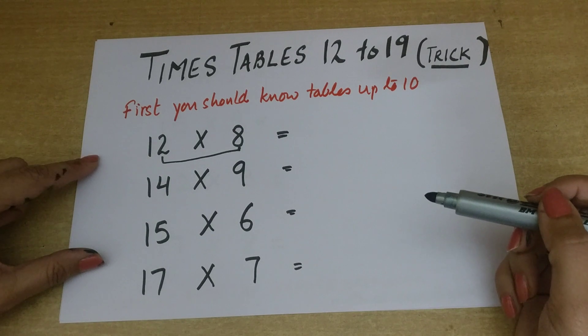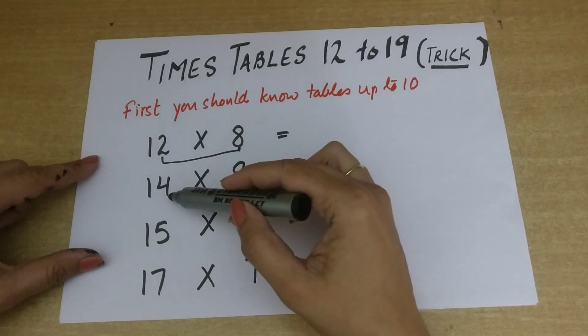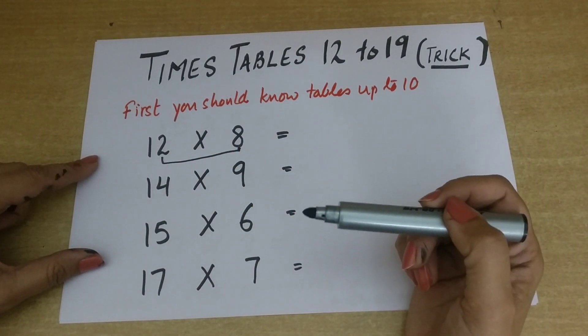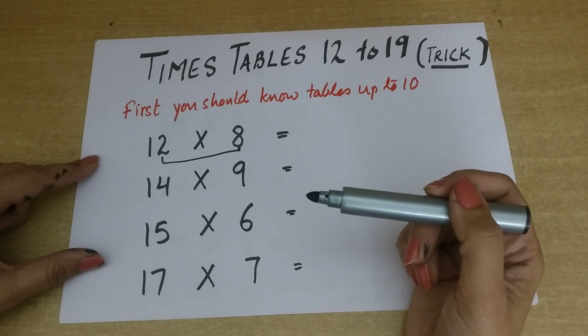So now I have taken four tables over here: table of 12, table of 14, table of 15, and table of 17. And yes, I know that you have not learned it. It's okay, don't worry.